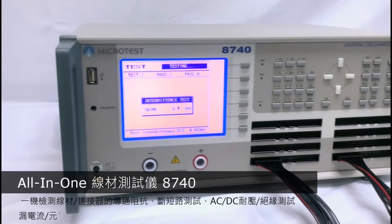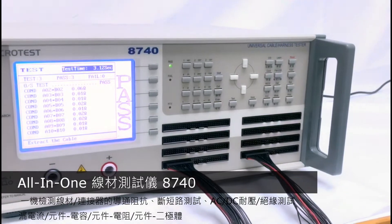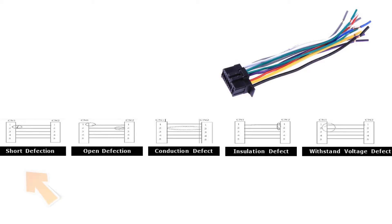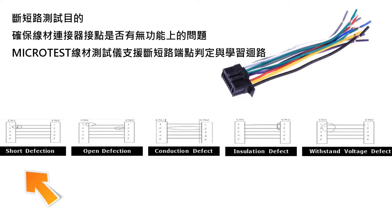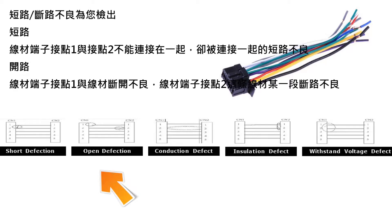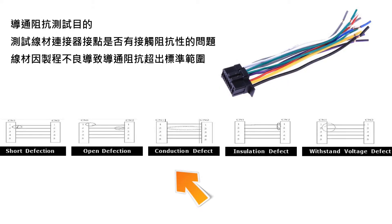The Microtest 8740 handles basic measurements for harness and connector testing. For short detection, pin 1 and pin 2 shouldn't contact but it does. For open detection, pin 1 and pin 2 should be short but it doesn't — this is a conduction defect.